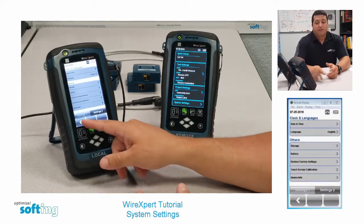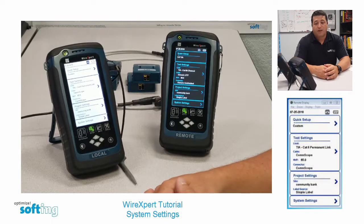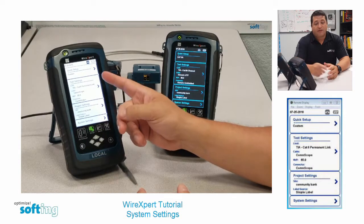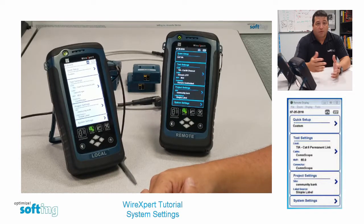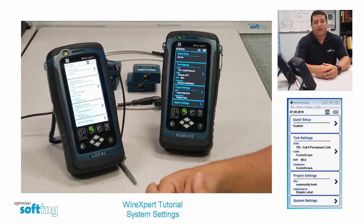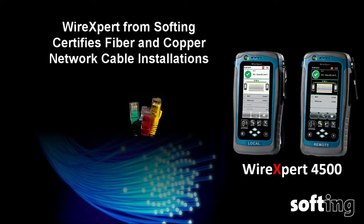We set these from the factory, so you'll be set up with the date format shown in the top left, as well as the calibration that we perform here at the factory. That's the system settings for the Wire Expert 4500.